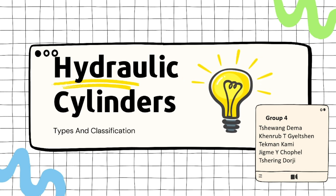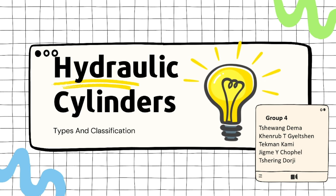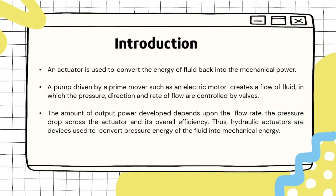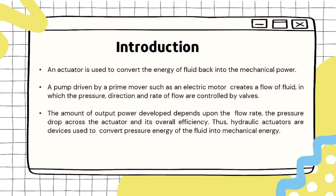Hello everyone, our group will be presenting on hydraulic cylinders, types and its classification. An actuator is used to convert the energy of a fluid back into mechanical power. A pump driven by a prime mover such as an electric motor creates a flow of fluid in which the pressure, direction and rate of flow are controlled by valves. The amount of output power developed depends upon the flow rate, the pressure drop across the actuator and its overall efficiency. Thus hydraulic actuators are devices used to convert pressure energy of the fluid into mechanical power.